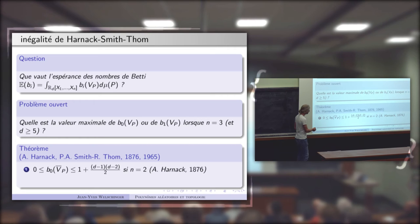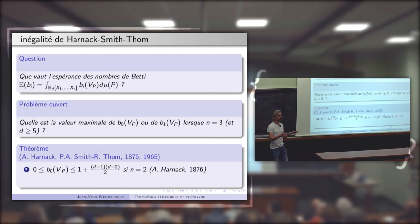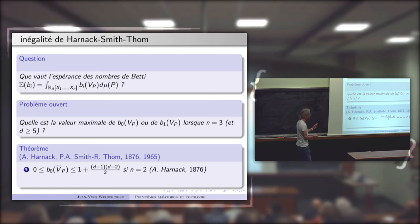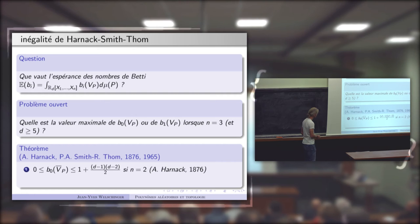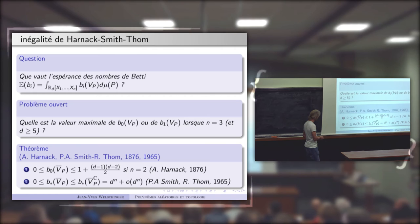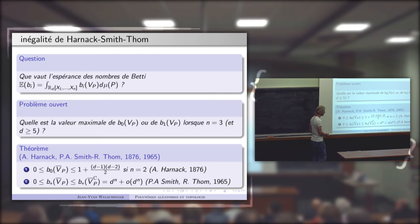Pour que ce résultat soit correct, on compactifie cette courbe dans le plan projectif réel — on regarde le lieu des racines dans l'espace projectif pour avoir une hypersurface compacte. En notant B* la somme totale des nombres de Betti du lieu réel, ce qui est toujours vrai quel que soit le nombre de variables, c'est que cette somme totale est majorée par la somme totale des nombres de Betti du lieu complexe.